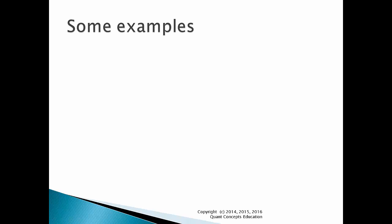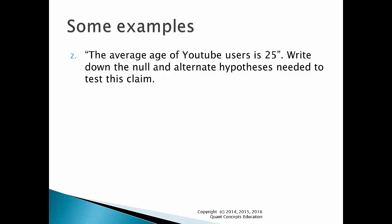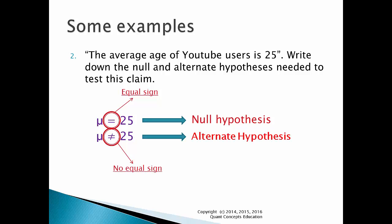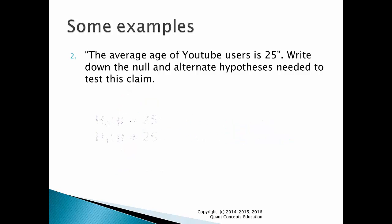Let's look at another example. Someone claims that the average age of YouTube users is 25. Write down the null and alternate hypotheses needed to test this claim. First, we write down the claim that is being made: the average age of YouTube users is equal to 25. Now we write down the counterclaim, or the opposite of that: the average age is not equal to 25. We can see the equal sign is in the first statement, so this must be the null hypothesis. The second statement has the unequal sign, so this must be the alternate hypothesis. We simply write these down in the proper format — H0 for the null hypothesis and H1 for the alternate hypothesis.